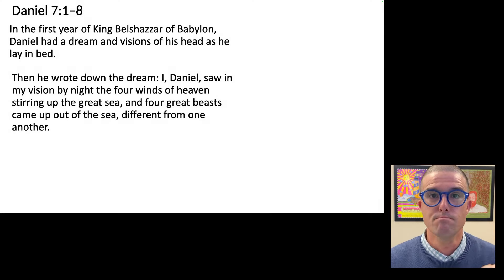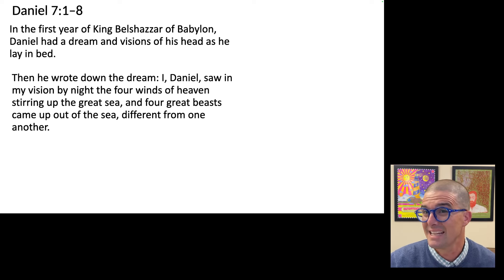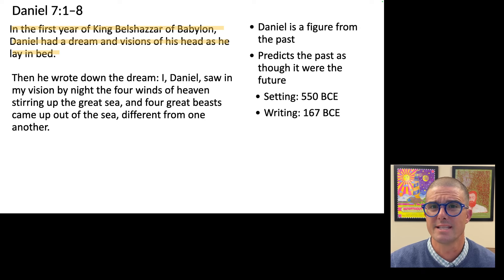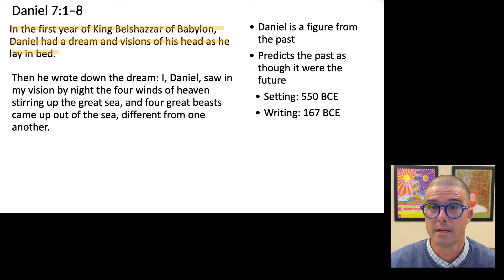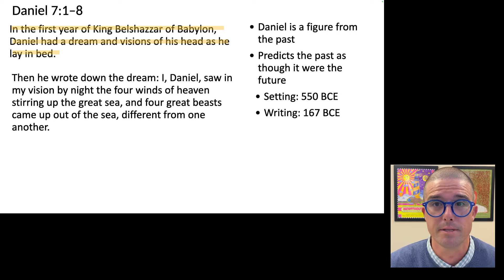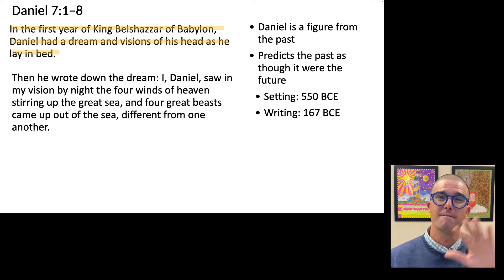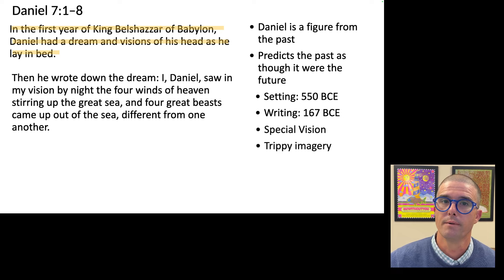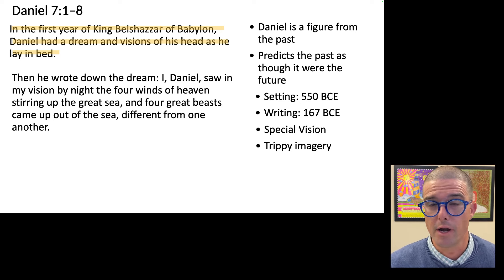If Revelation is the Bible's most famous apocalypse, then Daniel chapter 7 is probably its second most famous. It's easy to overlook the fact that Daniel is a figure from the ancient past — both for us and for the audience of Daniel. The book of Daniel is set in the Babylonian period, around 550 BCE, but the book was written during the Hellenistic period, around 167 BCE, the time Antiochus Epiphanes defiled the temple in Jerusalem and attempted to force Hellenization upon Judeans. So Daniel 7 already has one of the main features of apocalypses: the central figure is from the ancient past, from about 400 years before the text was written. It'd be like me writing a vision that George Washington had during the Revolutionary War.